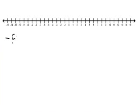We're going to add and subtract some negative numbers. The first problem is negative 5 plus 11. I have a number line here to help me, and I'm going to start at negative 5, because that's the first part of my problem. And then 11 is positive, so I'm going to move in the positive direction 11 spaces.